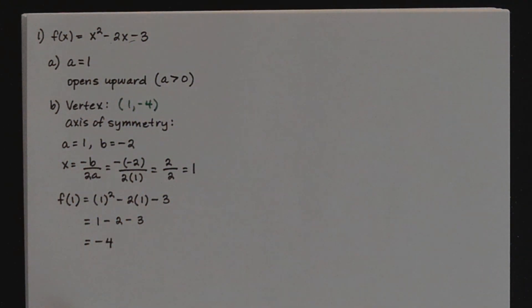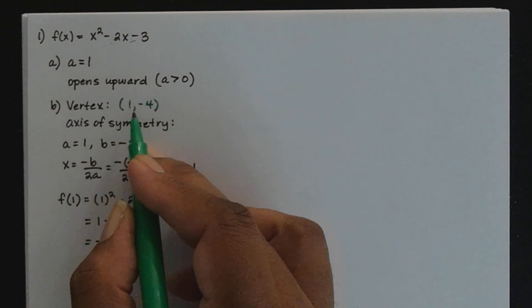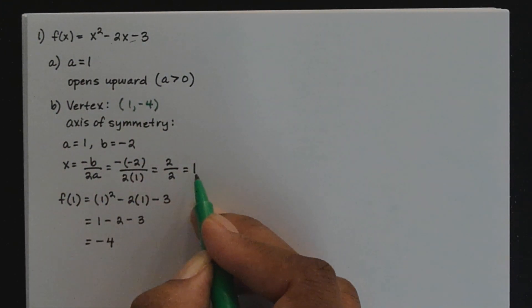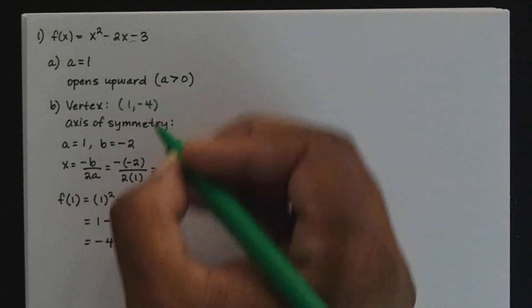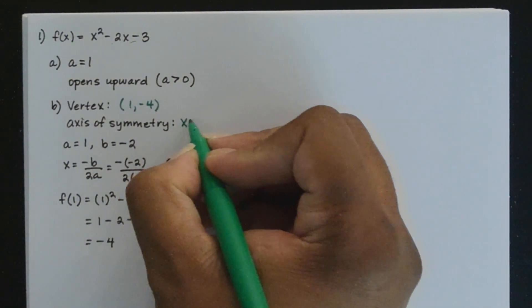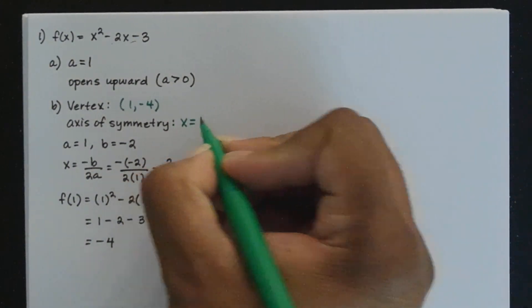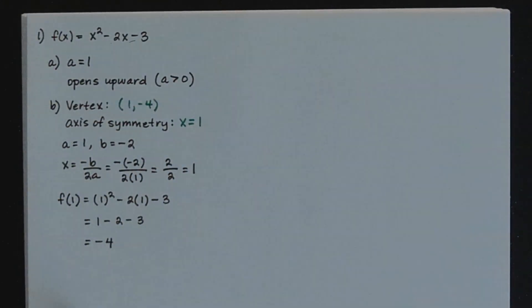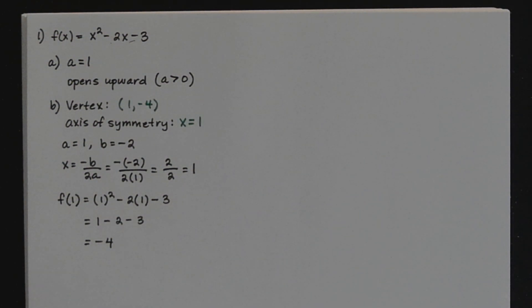For the axis of symmetry, that's going to be the x-coordinate of that vertex. Since x was equal to 1, the axis of symmetry is the line x equals 1. Make sure when you identify the axis of symmetry, you include x equals whatever the x-coordinate of that vertex is.